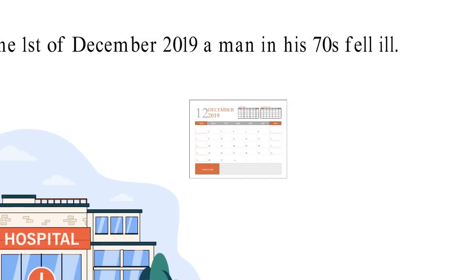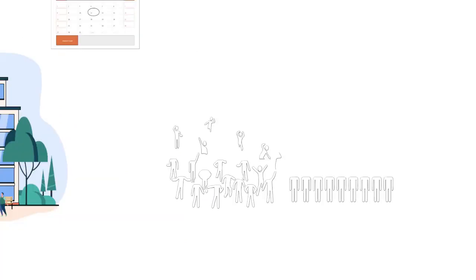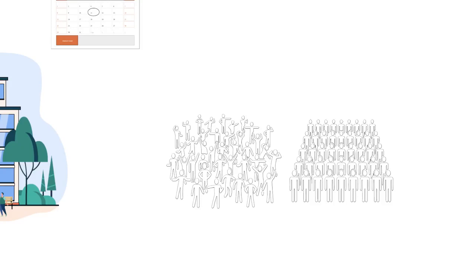Unbeknownst to anyone at the time, by December the 11th, up to 200 people were likely infected with the coronavirus.